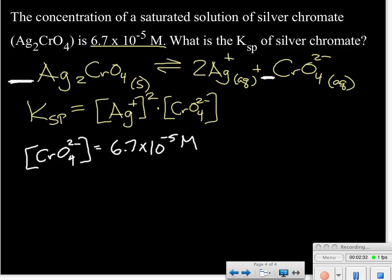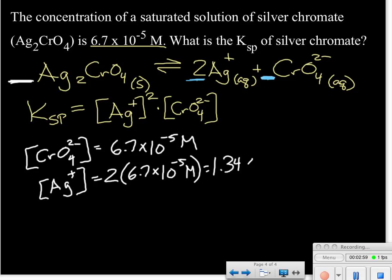Now our stoichiometry also says that for every one mole of our chromate ion, we're getting two moles of our silver ion, so our concentration of the silver ion is going to be double what our chromate ion concentration is. So our concentration is going to be 2 times 6.7 times 10 to the minus fifth molar, which is equal to 1.34 times 10 to the minus fourth molar. I'll keep that extra digit in there as a guard digit, even though I know that this answer really should have two significant figures.